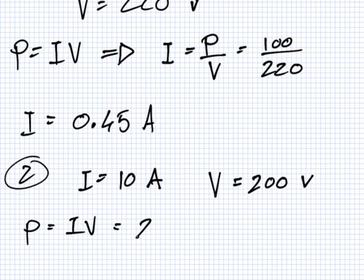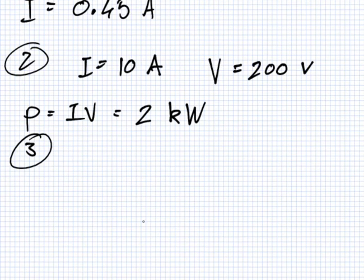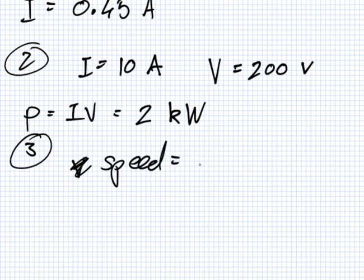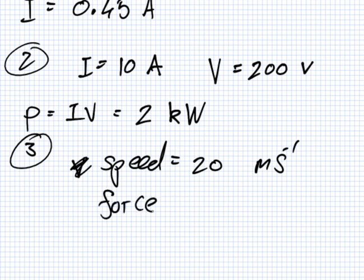Number two, what do I give you? Current. The current, what is it? 10 amps. And the voltage is 200. And what do I want? Power. Oh, that's easy. P equals IV, which equals 2 kilowatts.